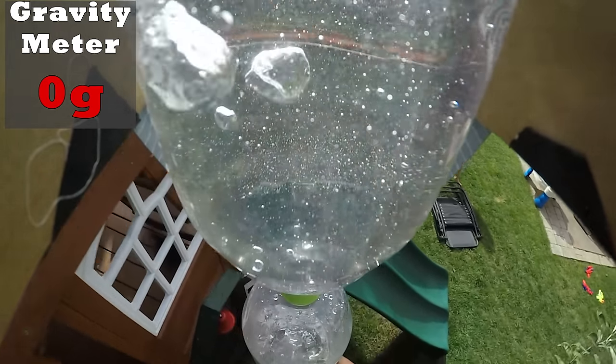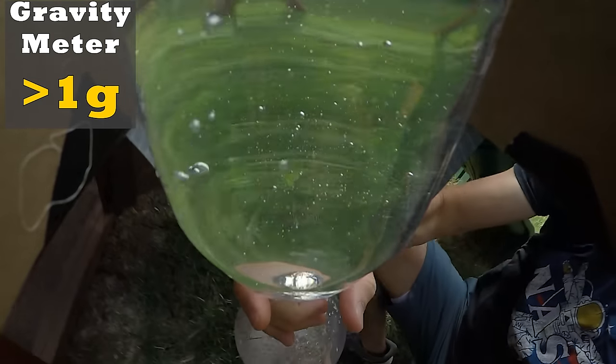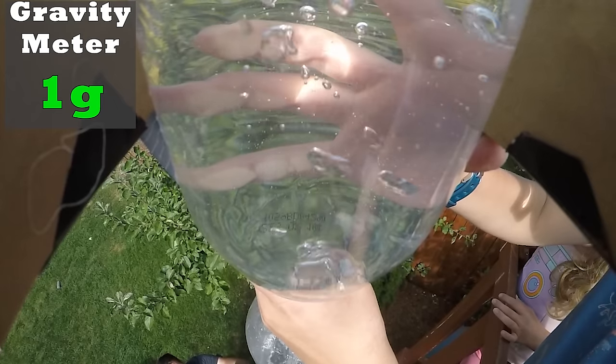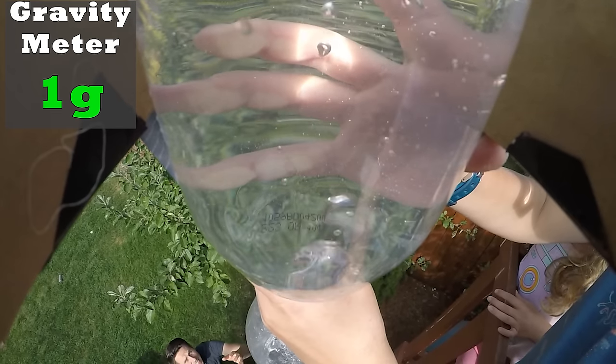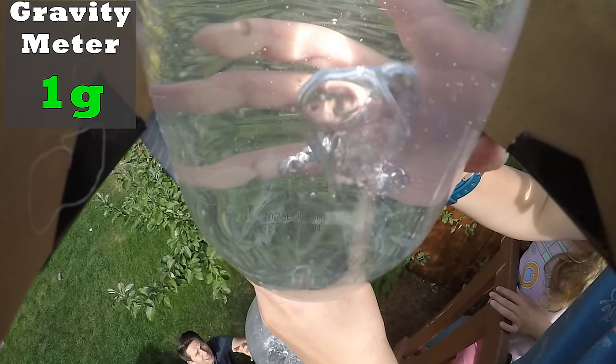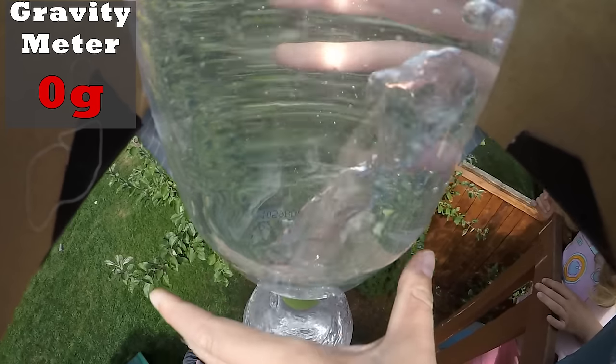So you can see that as soon as we drop it, the bubbles no longer move upward. So what happens to bubbles in zero gravity? They don't go anywhere. There's no up or down to go anywhere. And so they just stay exactly where they are. So the bubbles can't rise from the bottom bottle to the top bottle. They just stay where they are.